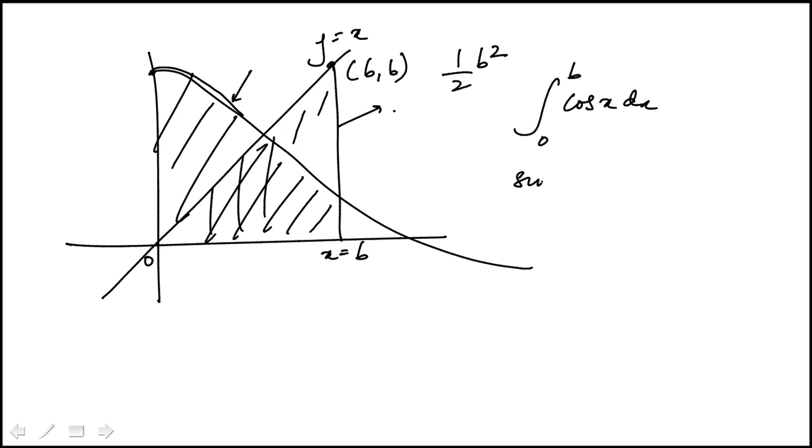So this is going to be sine X, that would be sine B minus sine 0, that's 0, so the condition is sine of B equals half B squared. So at this point, just use the answer choices.